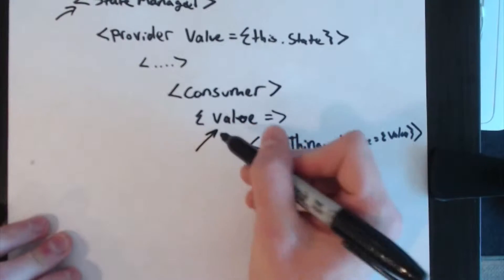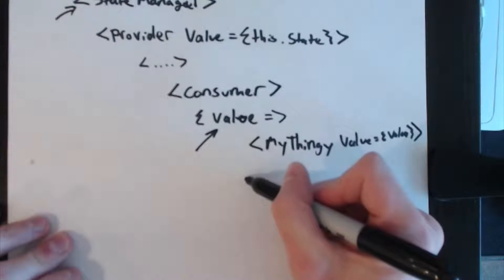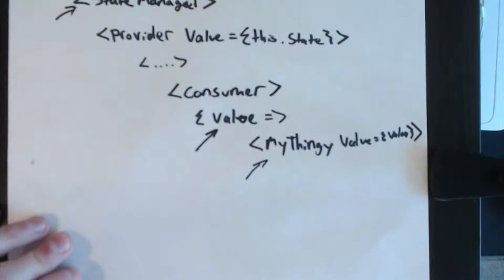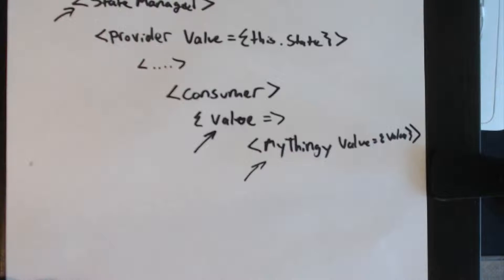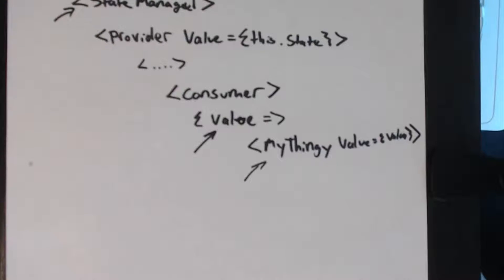So if this state manager up here updates its state, this value function here will rerun and it will re-render the my thingy component with a new value object. Every time we change the state on the state manager this will happen—the consumers further down the tree will rerun their render prop function and re-render all of their children.